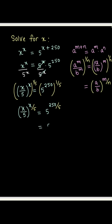Watch what I mean. The right-hand side is 5 to the power 250 divided by 5, which is 5 to the power 50, which is the same as 5 to the power 2 times 25. This can be written as 5 squared to the power 25, which makes it 25 to the power 25.